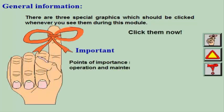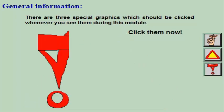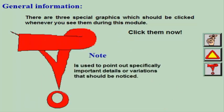There are four special graphics which should be clicked whenever you see them during this module. These cover points of importance regarding operation and maintenance, and are used as an indication of danger for life, health, or extensive damages to the engine and other equipment.